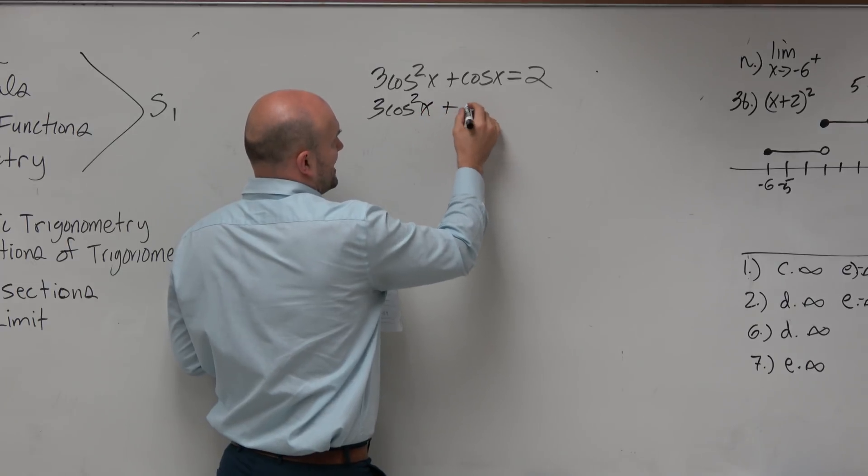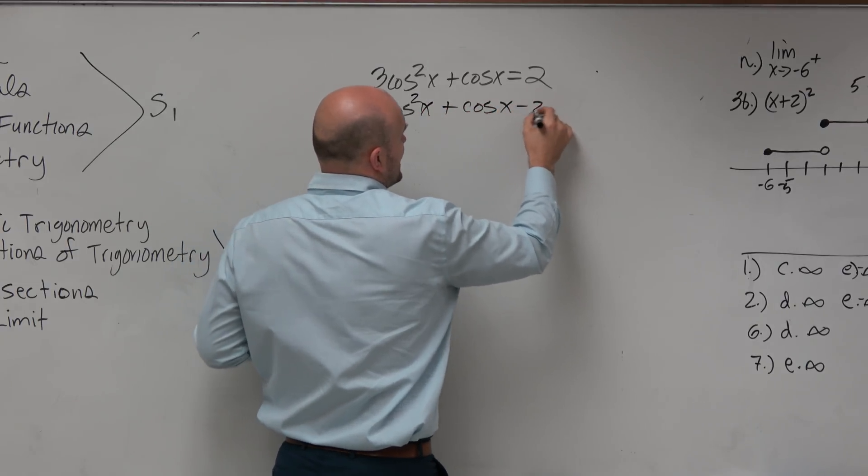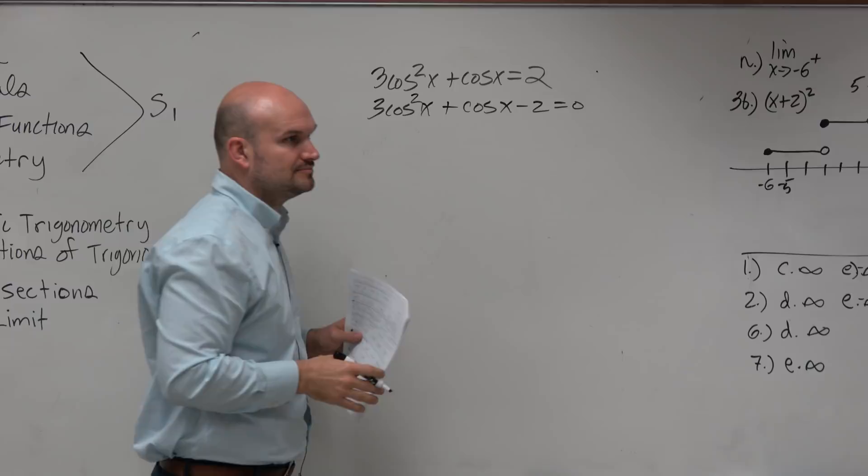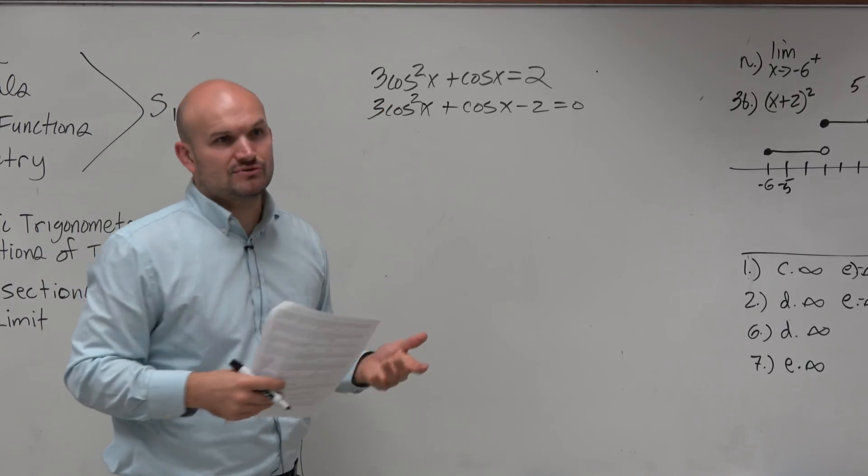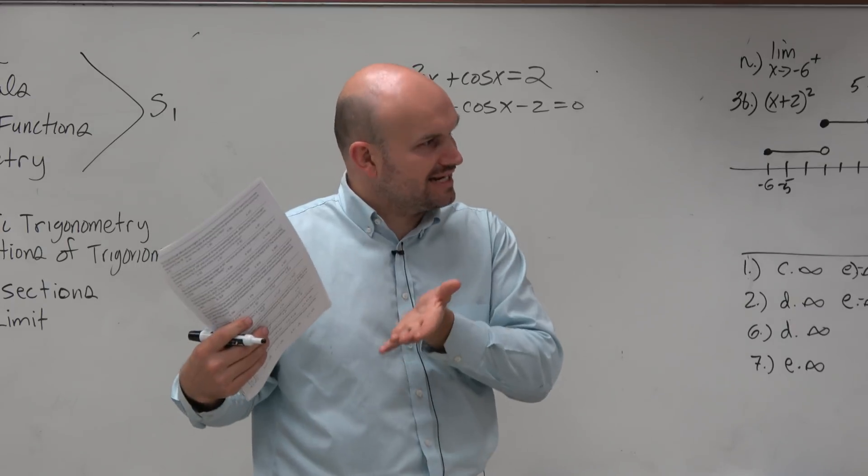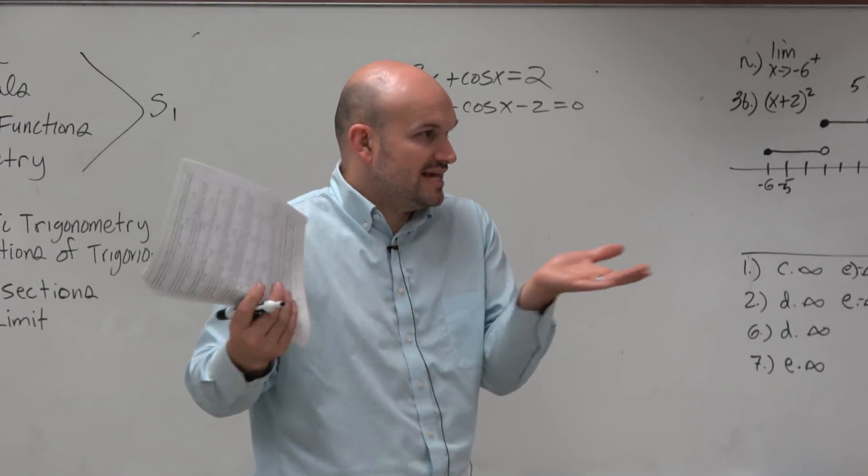So I'm going to think of this as like a quadratic. I'm going to get them to the same side and look into factoring them. Because if this is like 3x squared plus x equals 2, you've got to get them to the same side equal to 0 because you can't combine them.